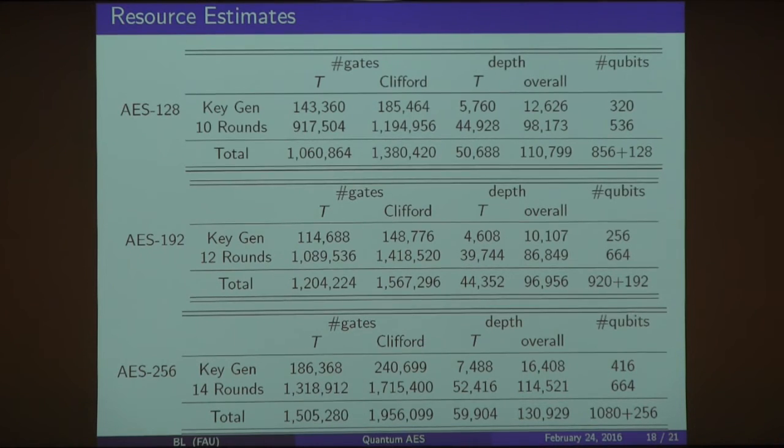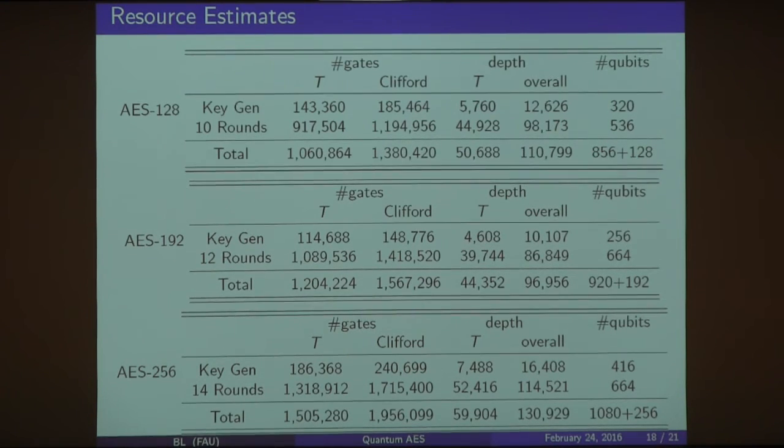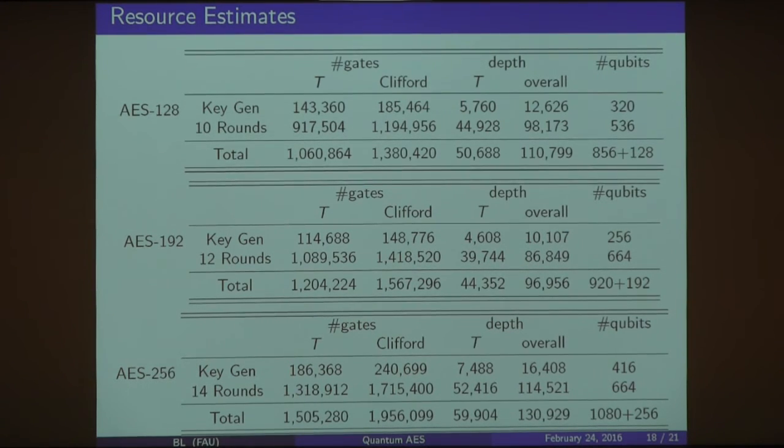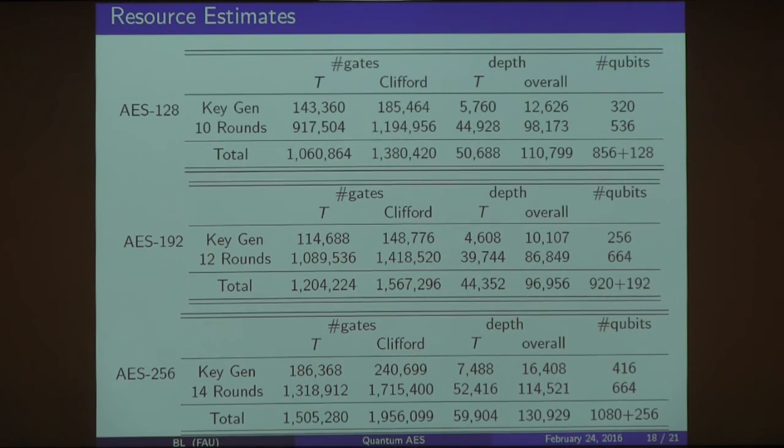Listing the number of gates and the depth of these is here. The number on the very bottom right is, for example, AES 128. This 856 is the total qubits for the key generation and the 10 rounds and then plus the 128 for the initial key. And you'll see the numbers listed here - how many gates in the depth to produce each of these three operations or these three AESs.